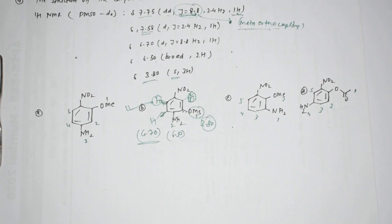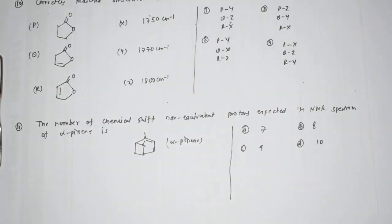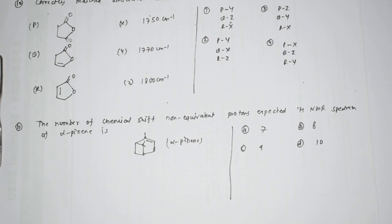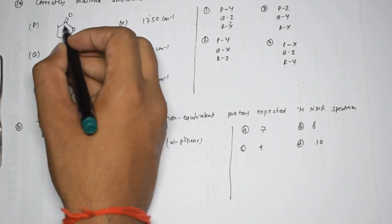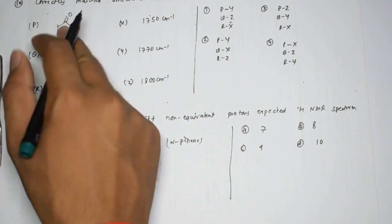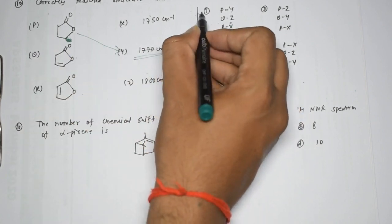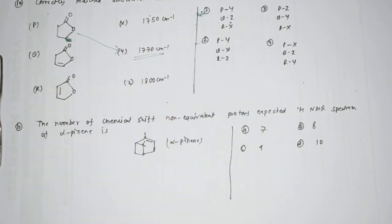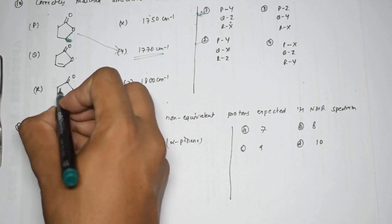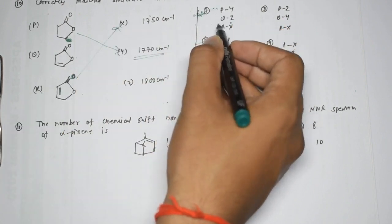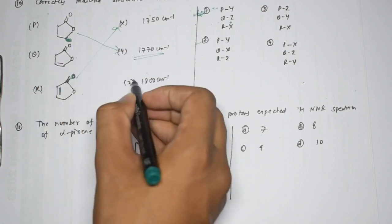The final question: match the structure to the IR value. For a lactone (cyclic ester), you need to remember: value around 1770 cm⁻¹. For the conjugated lactone R (with conjugation), the value is lower at ~1750 cm⁻¹ because conjugation reduces the C=O stretching frequency. So P corresponds to Y (~1770) and R corresponds to X (~1750). The first option, option E, is correct.